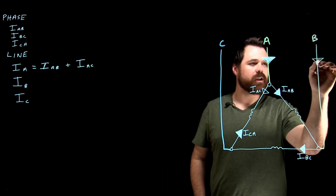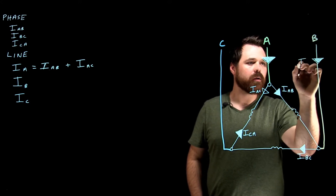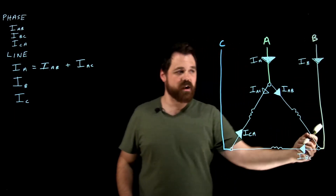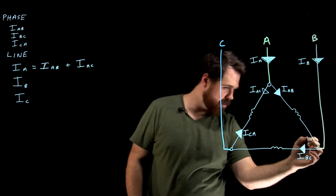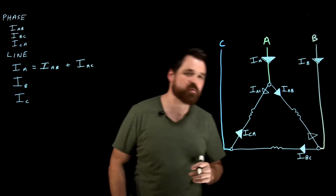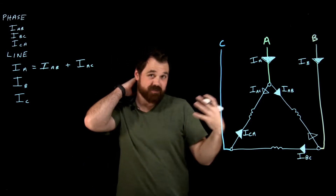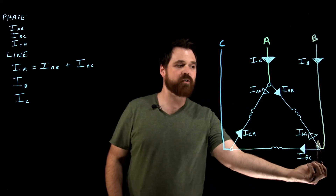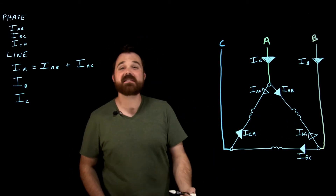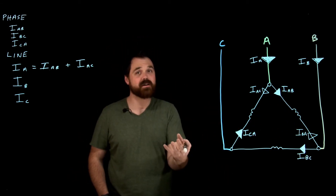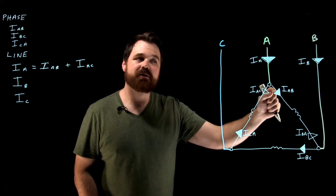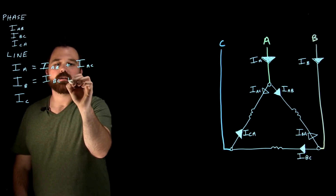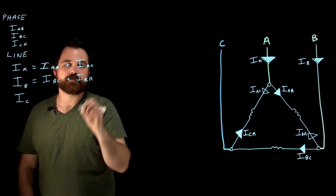Over here, this right here would be I_B. I_B comes down into this node, and everything coming into this node must come out. When the current in line B is at a positive alternation, we'll have I_BA, because it's flowing from B up to A — that's the inverse of I_AB, the same value only 180 degrees apart. So I_B equals I_BC plus I_BA.